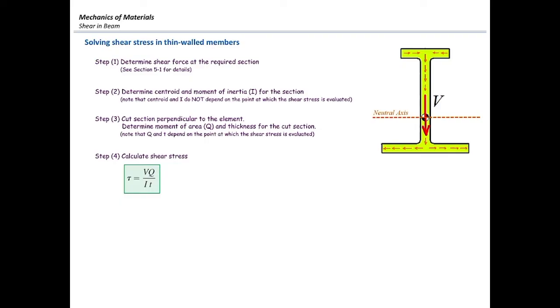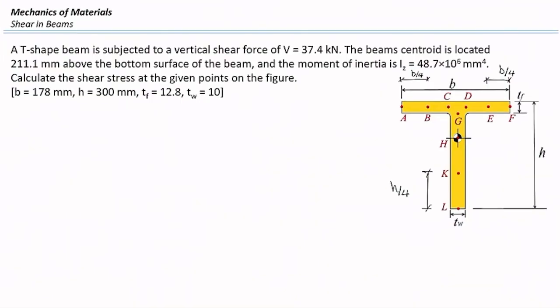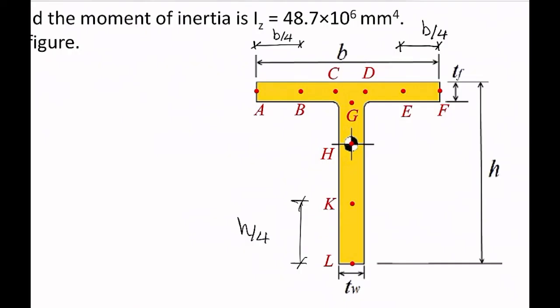Now let's look at some examples. A T-shape is subjected to a shear force of 37.4 kN in the vertical direction. There are about six to eight labeled points. I want to determine shear stress at every single point. For point A, cutting vertically perpendicular to the flange gives a cut area of zero, so shear stress is zero. The same applies to sister point F. Now let's focus on point B.